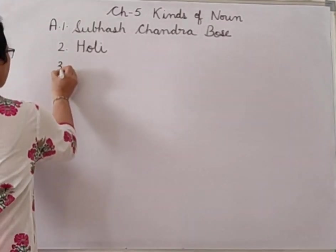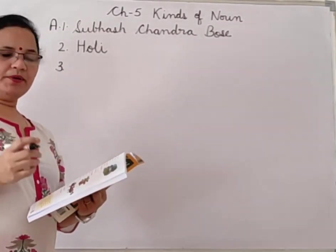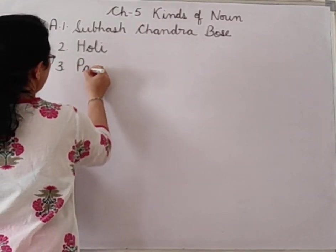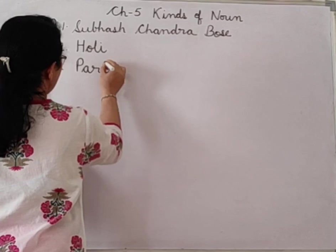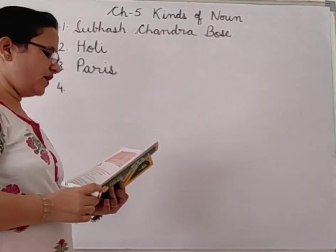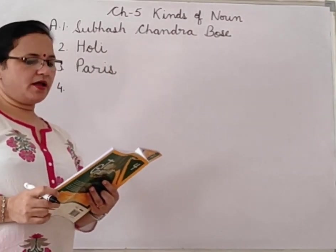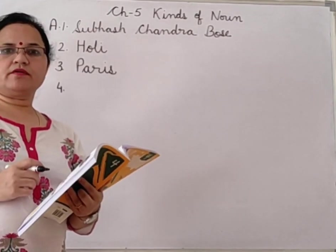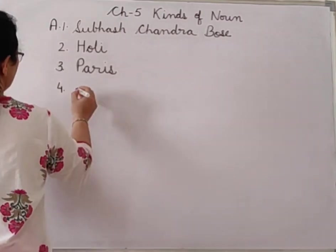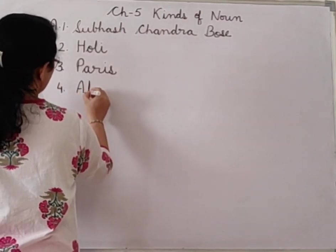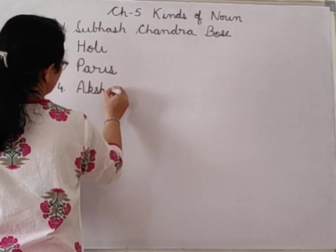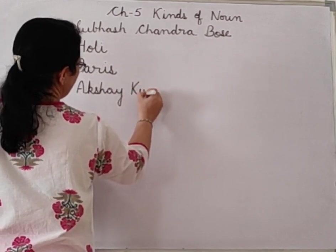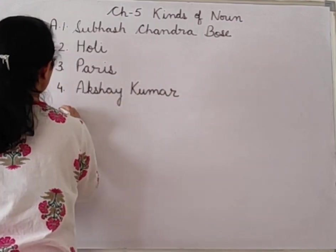Third: 'Dash is the capital of France.' What is the capital of France? Paris — P-A-R-I-S. Paris is the capital of France. Fourth: 'Dash is my favorite actor.' Any actor's name you can write. Suppose I am writing Akshay Kumar. You can write your favorite actor's name.